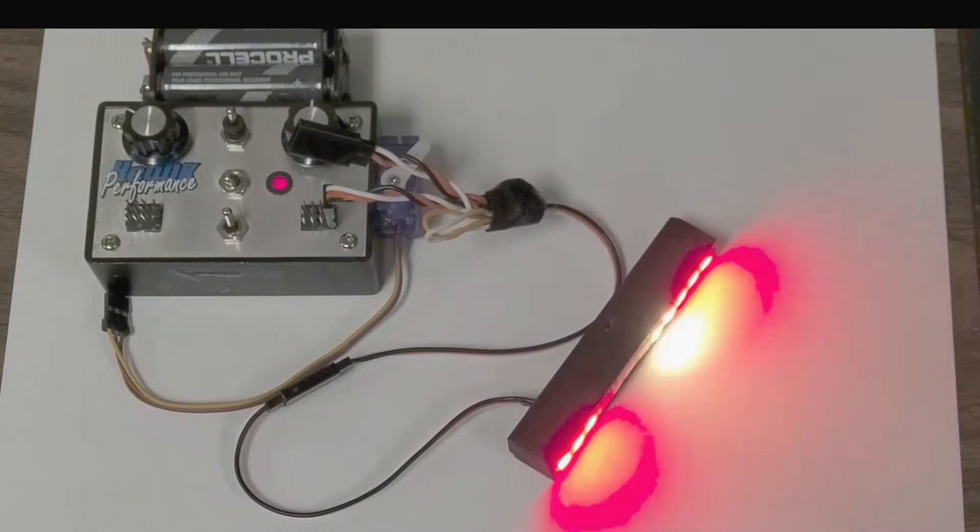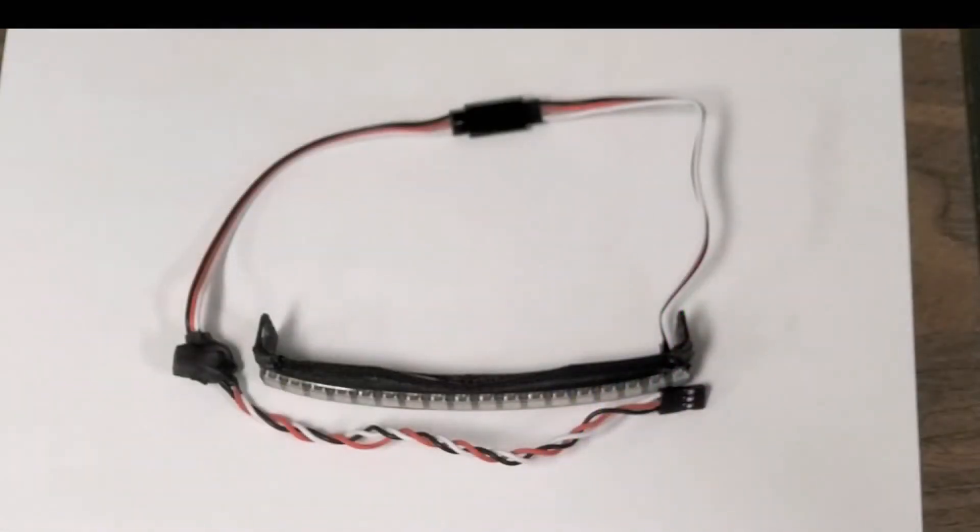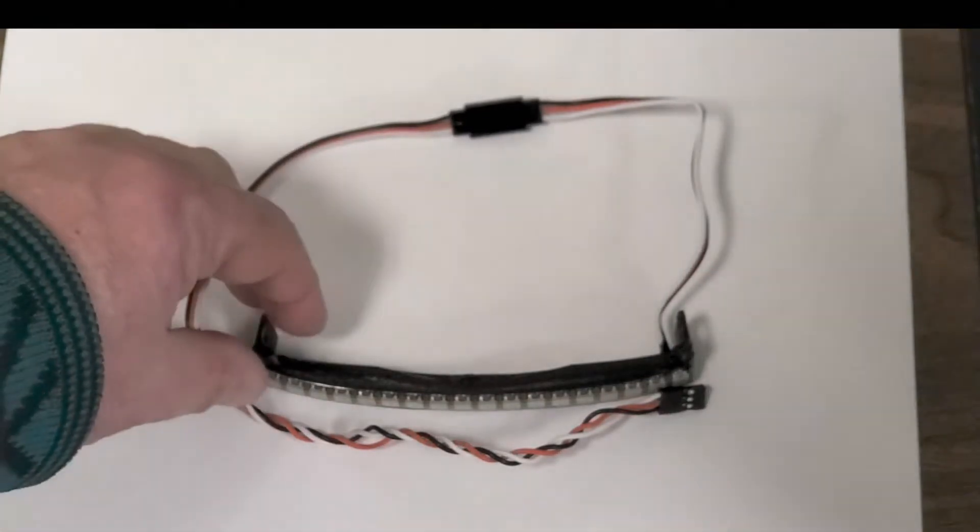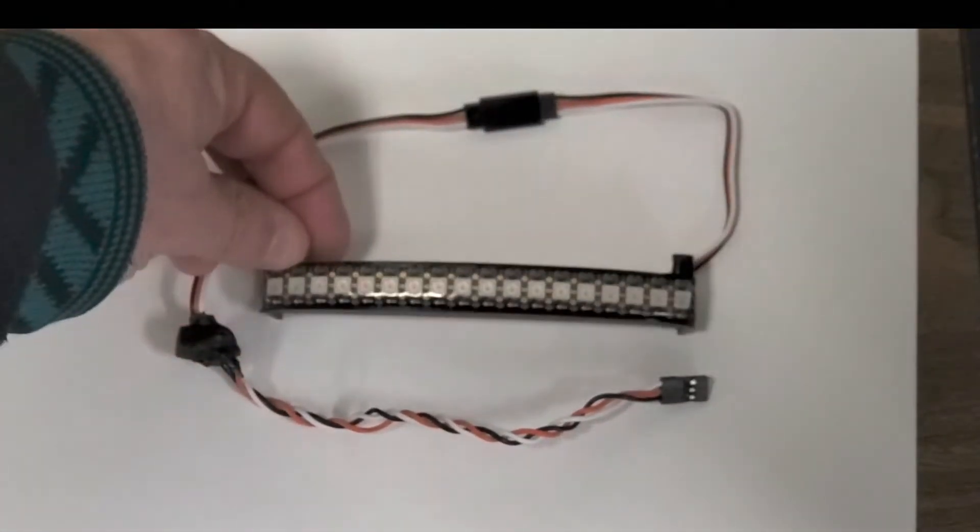In a moment I'll show you the front light bar I've made. This is the front light bar and a controller I've made for it. Again it's using RGB lights. So it's curved.